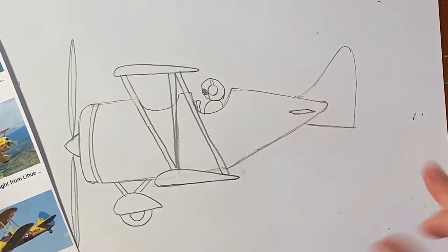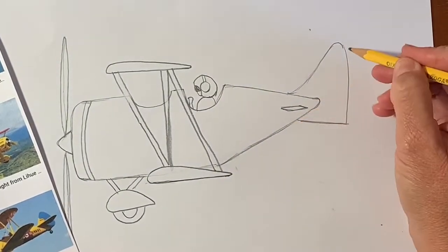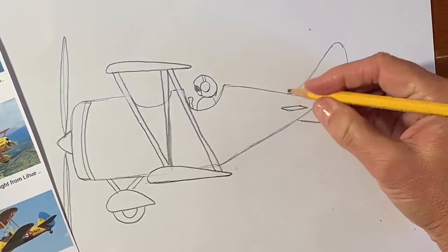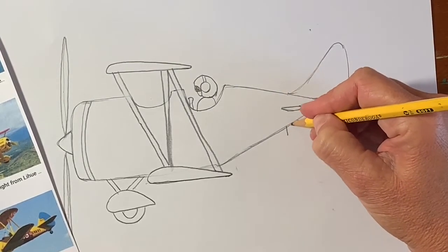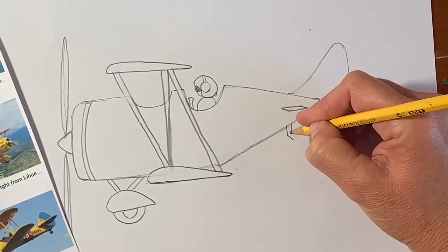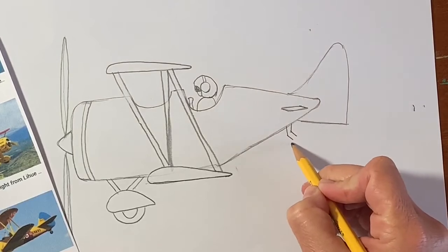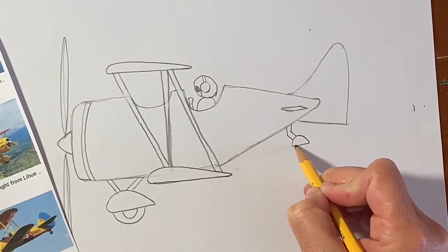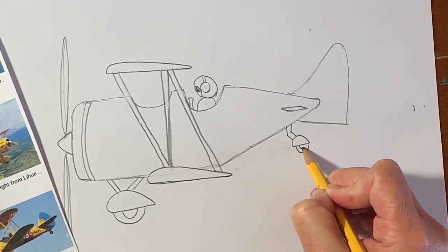A couple more details before we add colors. We're going to add the back wheel. It's a very small one. There are two short lines. And then two more going diagonal. And then a very similar shape to the front wheel, with a half circle. Boom.